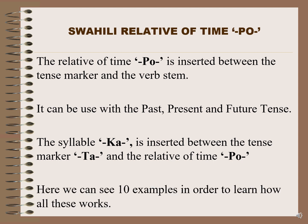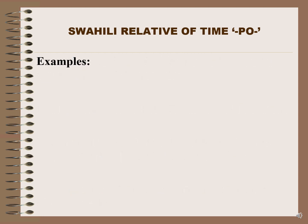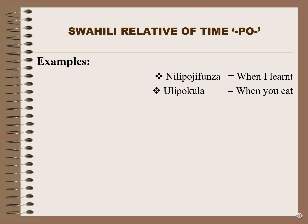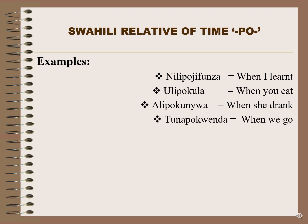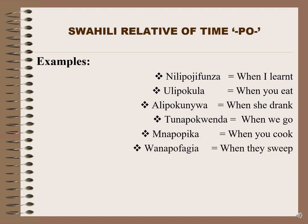Here are ten examples showing how po works across tenses. Number one: 'nilipojifunza' — when I learned. Number two: 'ulipokula' — when you ate. Number three: 'alipokunwa' — when she drank. Number four: 'tunapokwenda' — when we go. Number five: 'mnapopika' — when you cook. Number six: 'wanapofagia' — when they sweep.